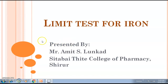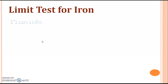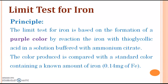Let's begin with the basic principle involved in the limit test for iron. The limit test for iron is based on the formation of a purple color by reaction of iron with thioglycolic acid in a solution buffered with ammonium citrate. The color produced is compared with a standard color containing a known amount of iron, which is 0.14 mg of iron. This is also an example of the comparison method, and instead of obtaining opalescence or turbidity, we get color.